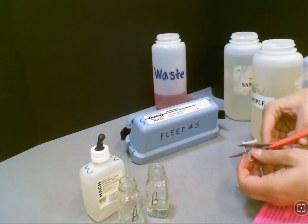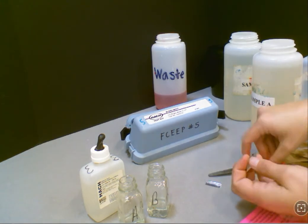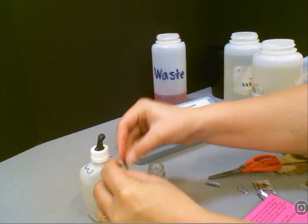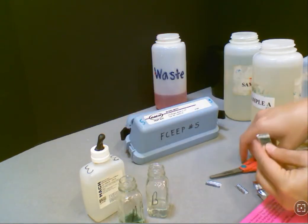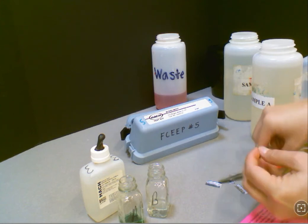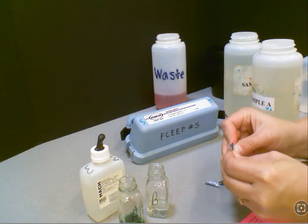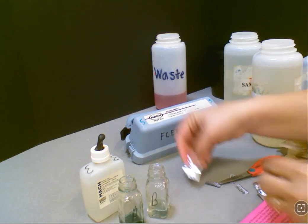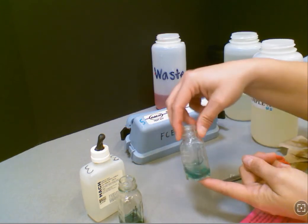After that step, you're going to add the brome-cresol-green-methyl-red powder pillow to both samples A and sample B, and you'll swirl those also.